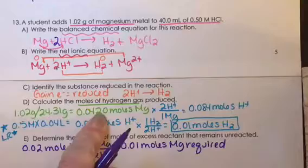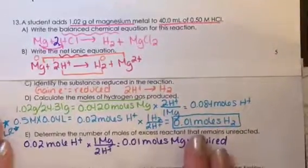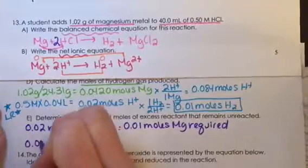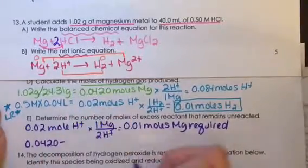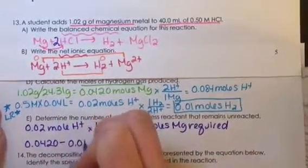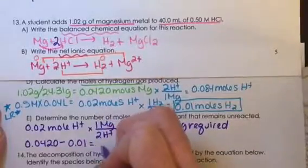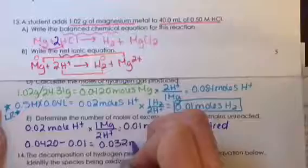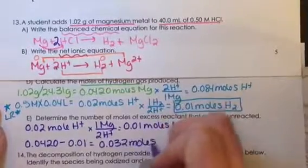We can see from our previous calculation that we have 0.0420 moles available, and then if we subtract the moles needed, we get the moles that are left over, which is 0.032 moles of magnesium.